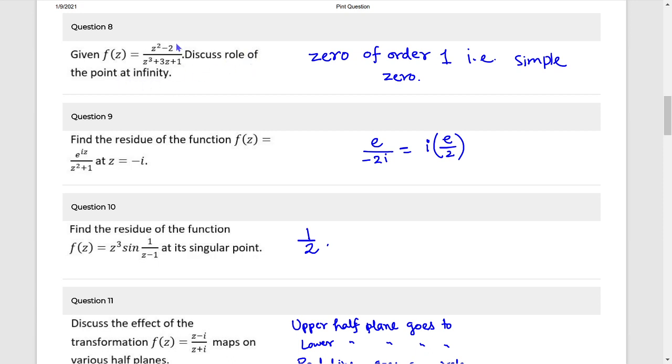Role at infinity. Infinity is what? So Z are j 1 by Z. So the 1 by Z is 0. 0 of order 1, simple 0.